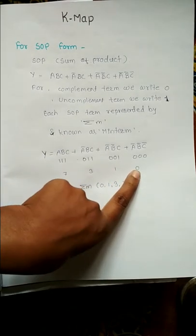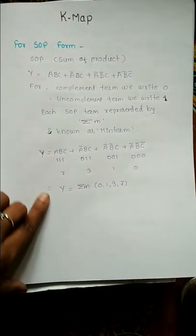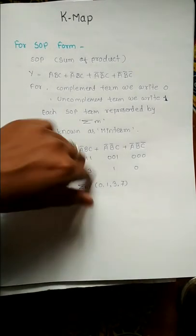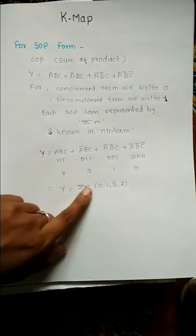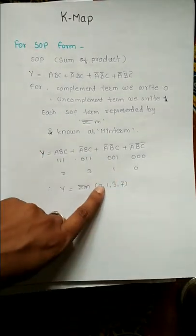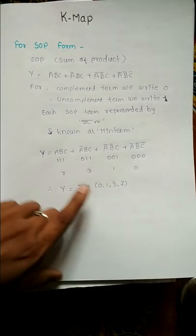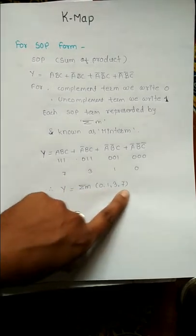Therefore, final equation y equals summation of M (minterm), and the terms are 0, 1, 3, 7. You can write it in this format or in this map, both will be same.